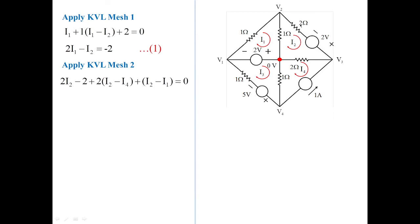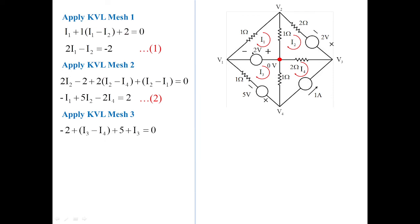Applying KVL to mesh 2: starting with 2·I2, minus 2 volts on the path, plus 2·(I2 − I4), plus 1·(I2 − I1) = 0, giving minus I1 + 5I2 − 2I4 = 2. Applying mesh analysis for mesh 3: minus 2 + 1·(I3 − I4) + 5 + 1·I3 = 0, giving equation 3: 2I3 − I4 = minus 3.